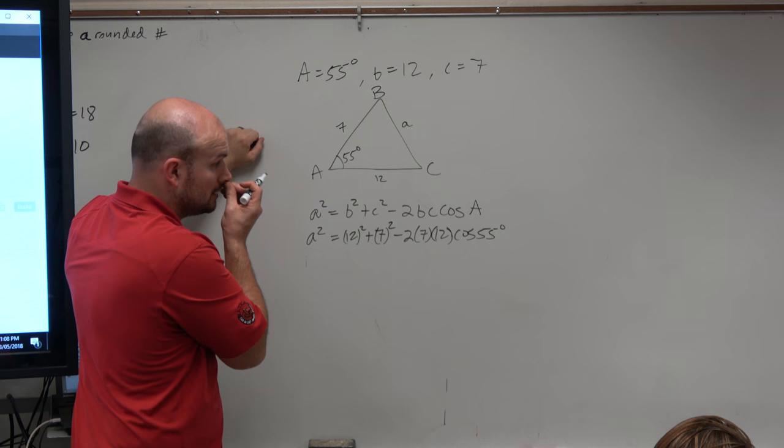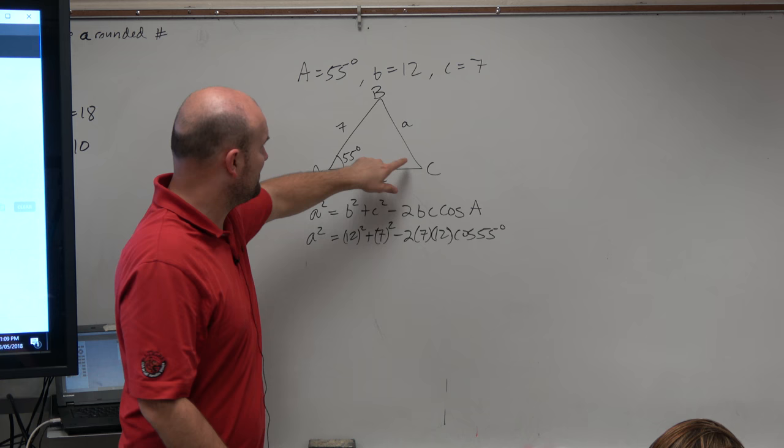Student asks: How do you know which one to use? Again, the reason why I did this one is I don't have any angle C or B. So I don't want to use cosine of B, cosine of C, because I have nothing to plug in there, right?